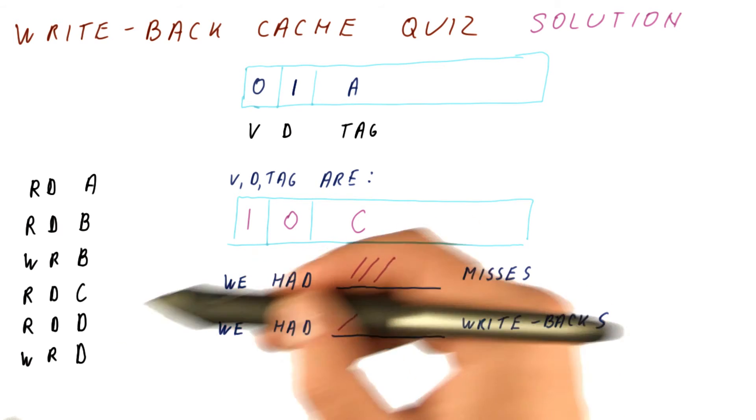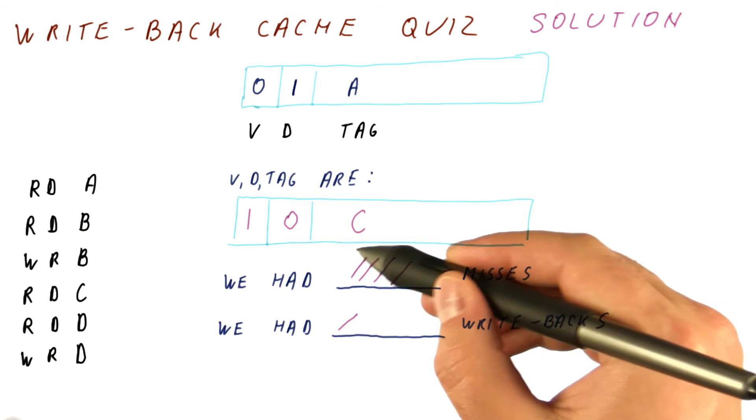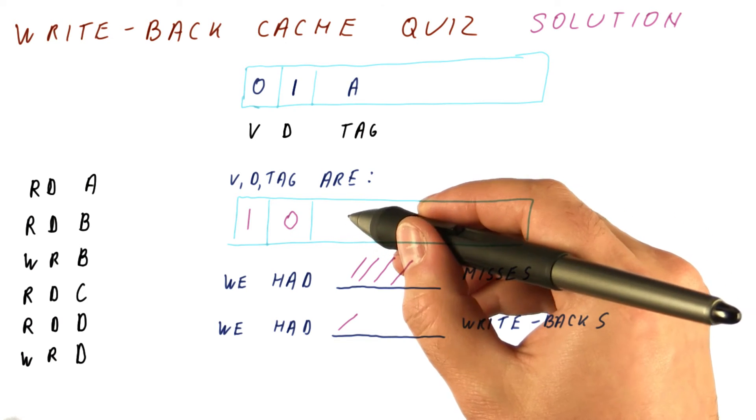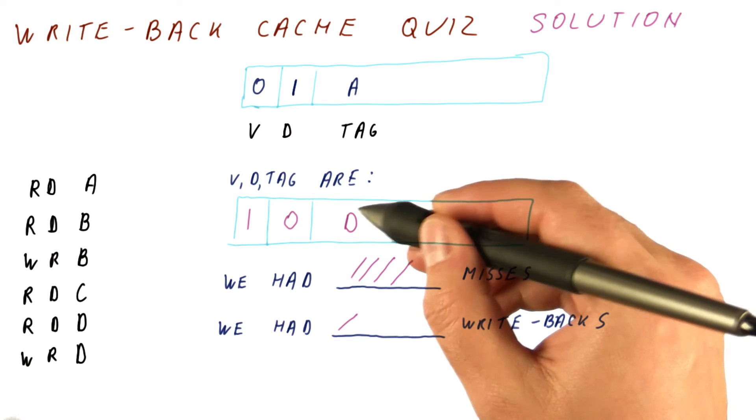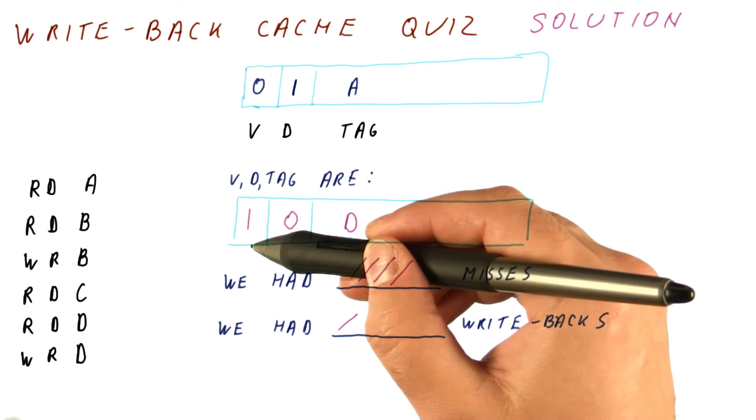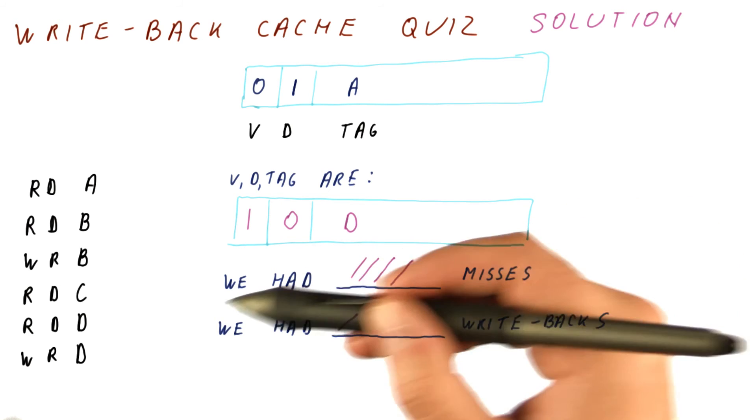Next, we read D. It's a miss. We need to kick out C. C is clean, so we don't have a write-back. We bring in D and overwrite C in the cache. It's a read, so the dirty bit is zero and the valid bit is one.